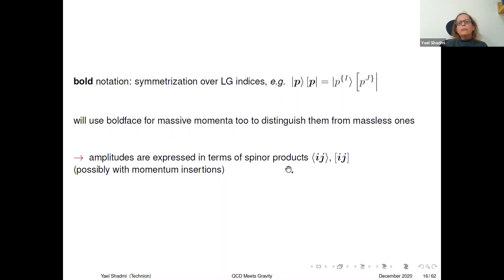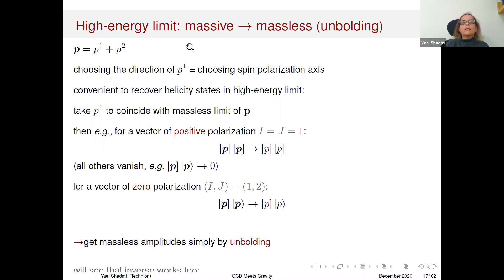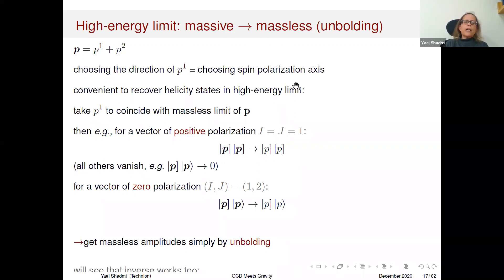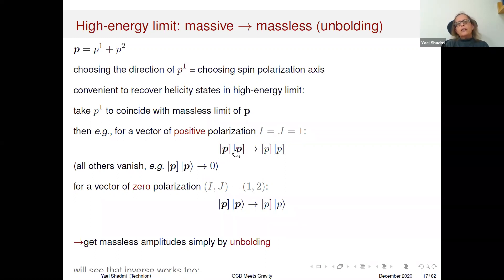At the end of the day, my amplitudes are going to be expressed in terms of spinor products that are bolded, possibly with momentum insertions inside. What's really nice about this is that it's very easy to take the high energy limit — it basically corresponds to taking the bolded amplitudes and unbolding them. Your massive momentum is given by p1 and p2; choosing the direction of p1 amounts to choosing the direction of the spin polarization axis. In order to recover helicity amplitudes, we take p1 to coincide with the massless limit of p.